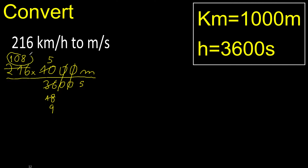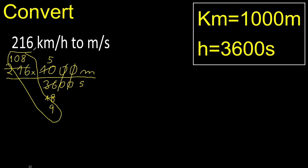108 can be divided by 9. 108 divided by 9 is 12. 12 multiplied by 5 is 60.